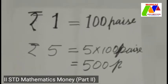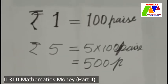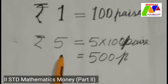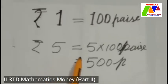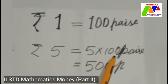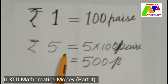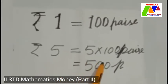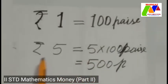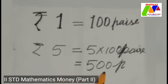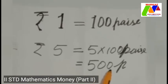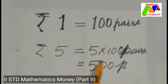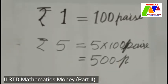Children, to convert rupees to paise, we can multiply by hundred. In other words, we can add two zeros to the right of the amount given in rupees.